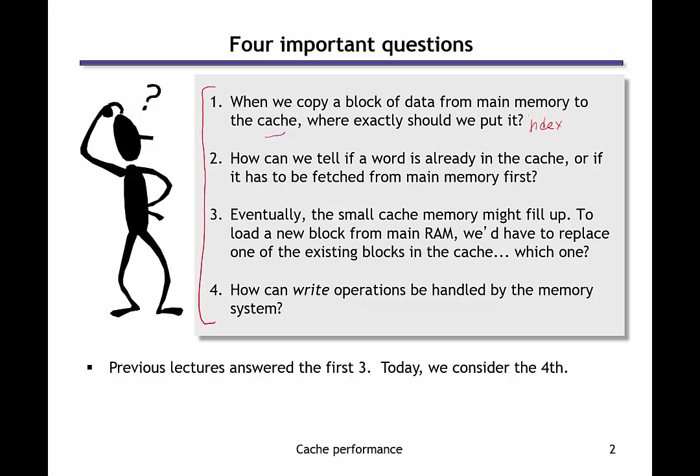The second question was: how can we tell if the data we want is already in the cache? The answer was that we tag all of our data so that when we look at a given index in our cache, we can check if it's the data we're looking for. Third was: when a set of the cache fills up and we want to put new data in, what data should we replace? We introduced least recently used (LRU) — we kick out the data we haven't used for the longest time. In this video, we'll focus on the fourth problem: how to handle write operations in our memory system.